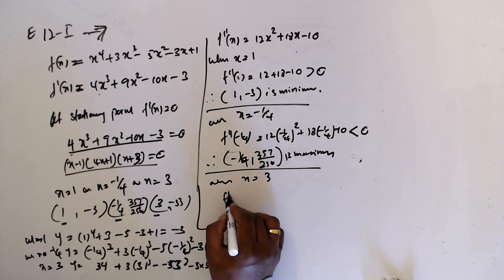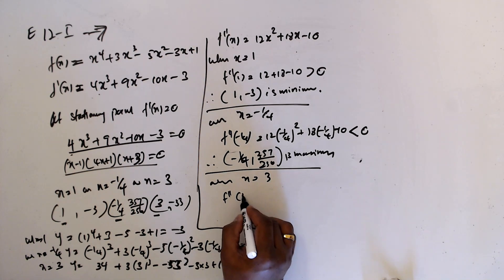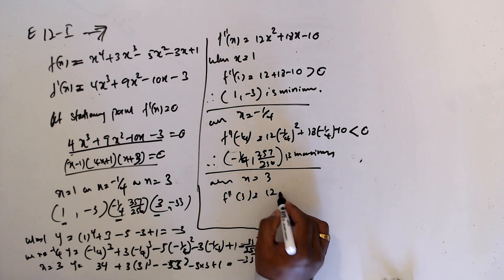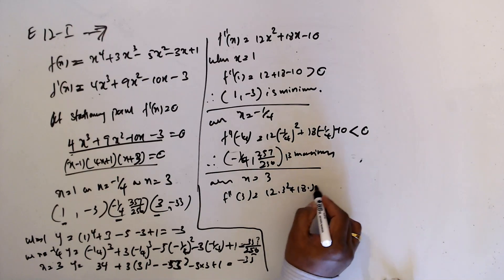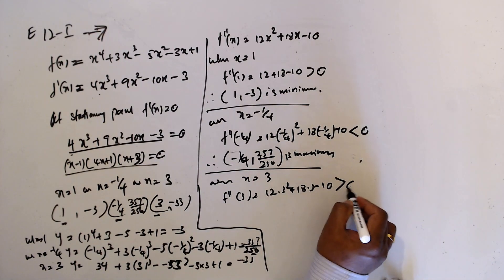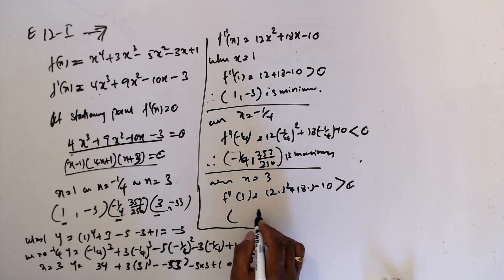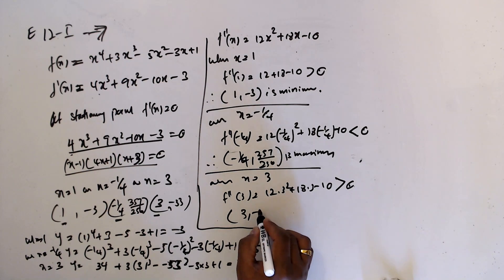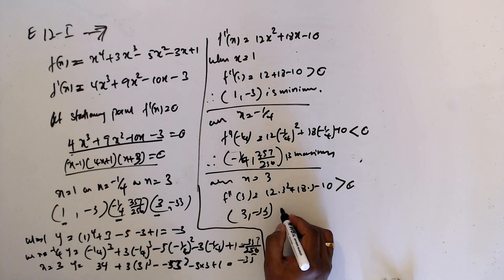f double prime 3 equal 12(3)^2 plus 18 times 3 minus 10, greater than 0. Hence (3, -35) is a minimum.